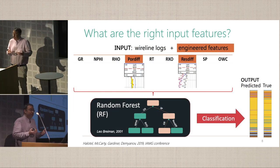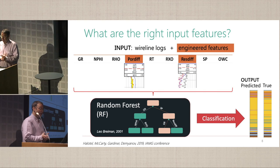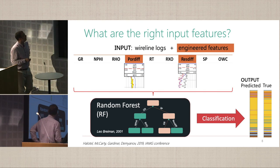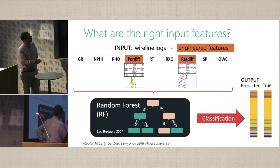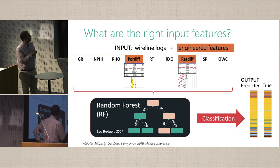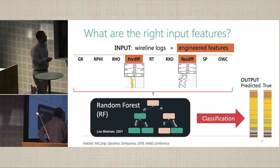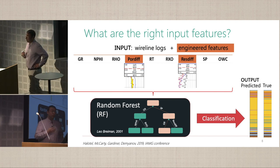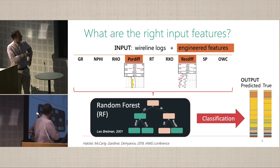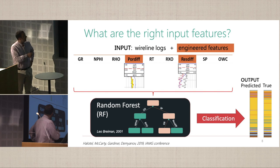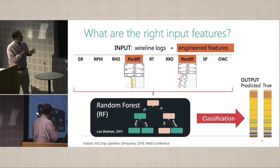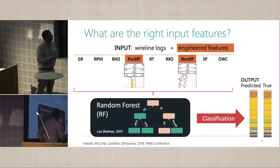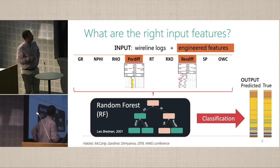We set up a traditional facies classification where we used wireline log inputs including raw logs, but also engineered features. This is what petrophysicists would do — they actually look at how the logs interact with each other, cross-plots, and how they differentiate.